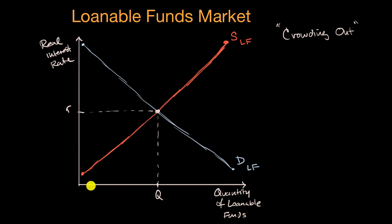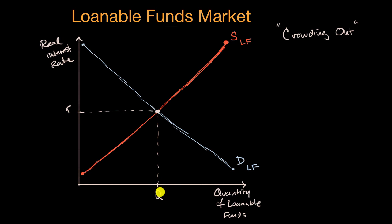So just to be clear what's going on here: the horizontal axis shows the quantity of loanable funds. The vertical axis shows the price of borrowing, which is our real interest rate. Our equilibrium real interest rate and quantity is determined by the intersection between the supply of loanable funds curve and the demand for loanable funds curve.